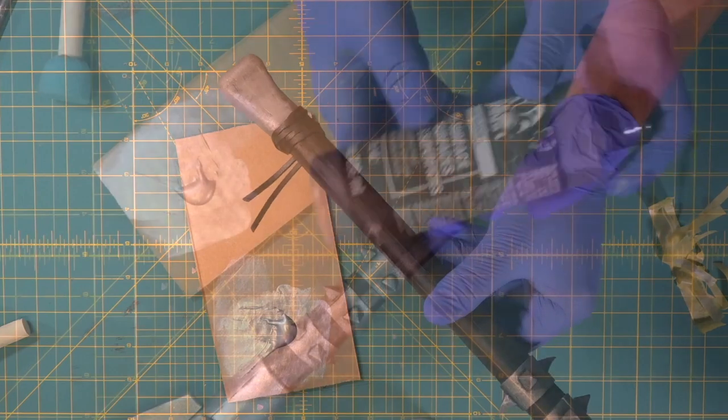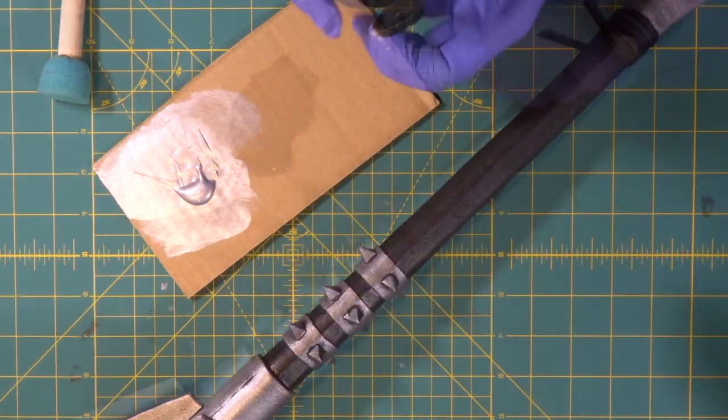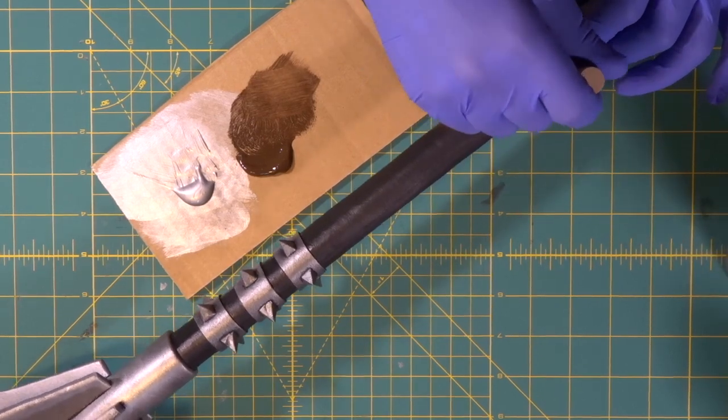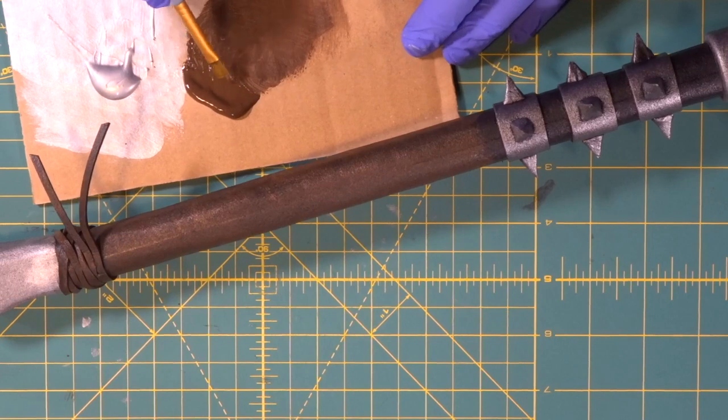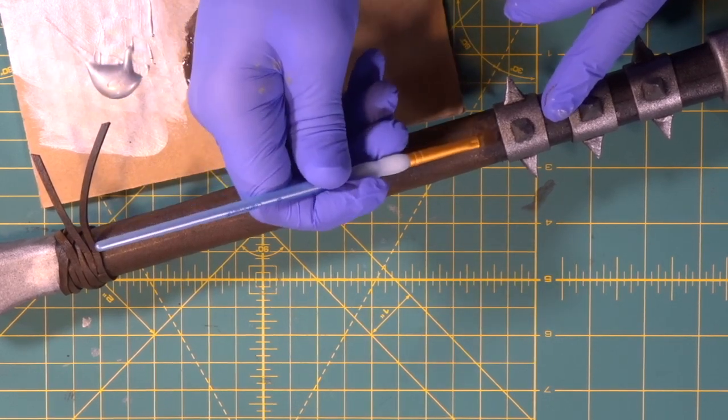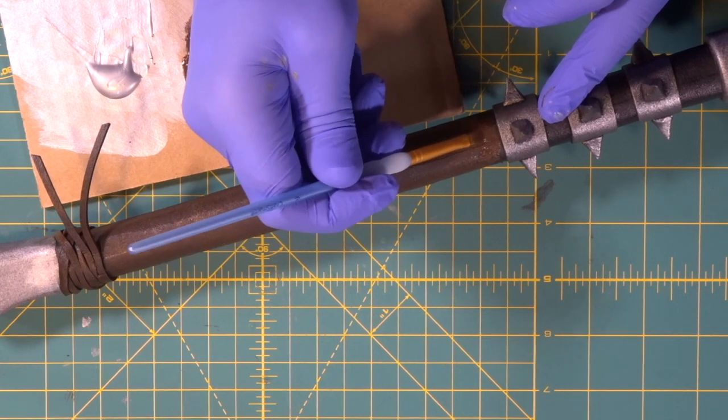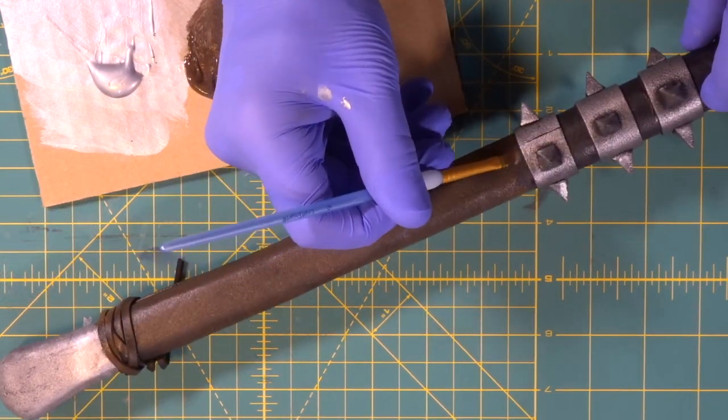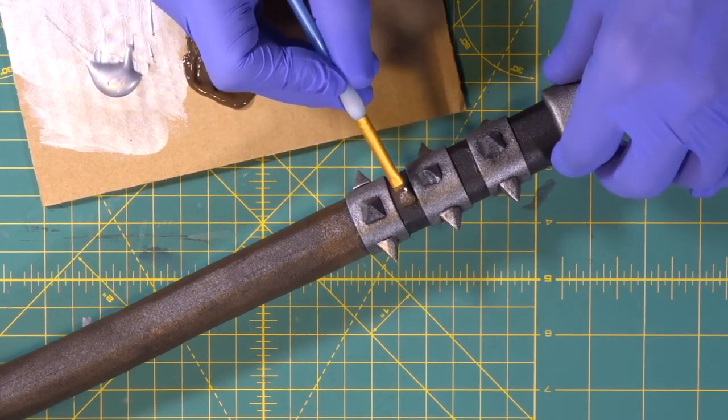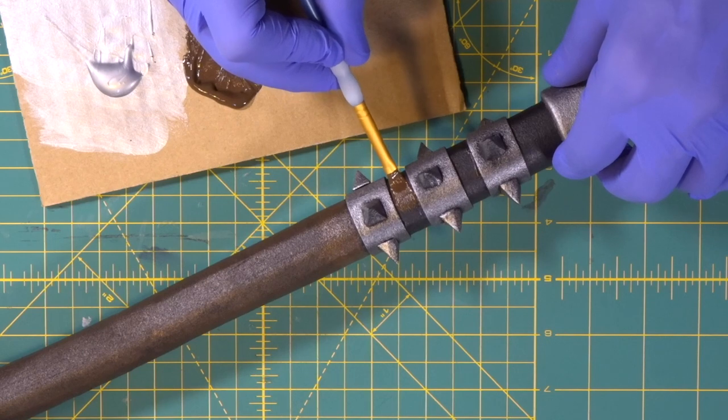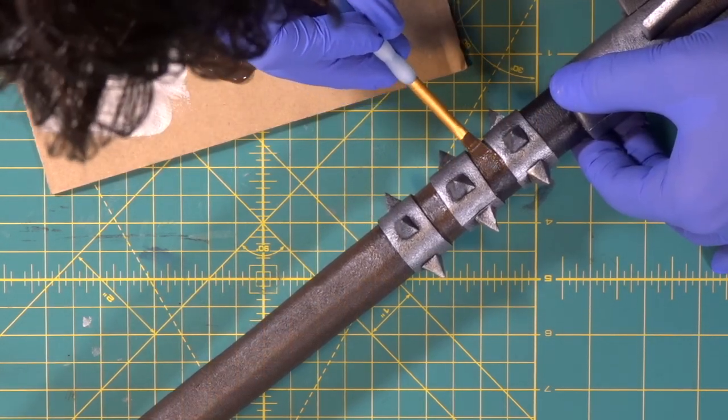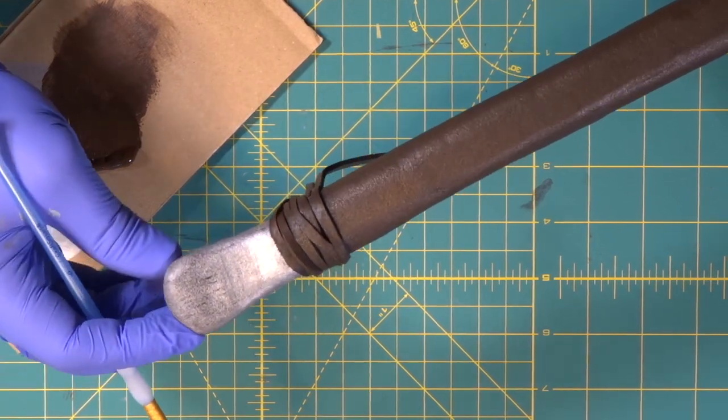All right, now we're going to come in with our brown. That's it, just keep going. We're going to cover the handle. All right, now we're going to come in with our brush and we're going to get close up to our bands, like that. Just take your time, get inside just like that. And we got the leather kind of spotted with brown as well.